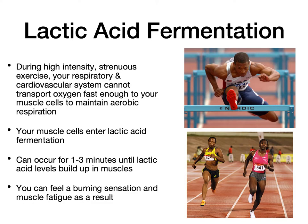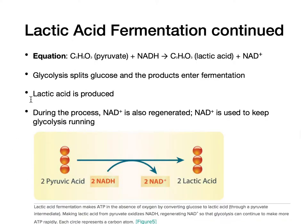Here's the equation for lactic acid fermentation. It begins with pyruvate — not glucose, because glycolysis already broke glucose into pyruvate — plus NADH. The products are lactic acid, which is toxic to us (we can't tolerate very high levels, which is why we can't sprint forever), and NAD+. That NAD+ goes back into glycolysis to keep it running, allowing this process to continue for one to three minutes.